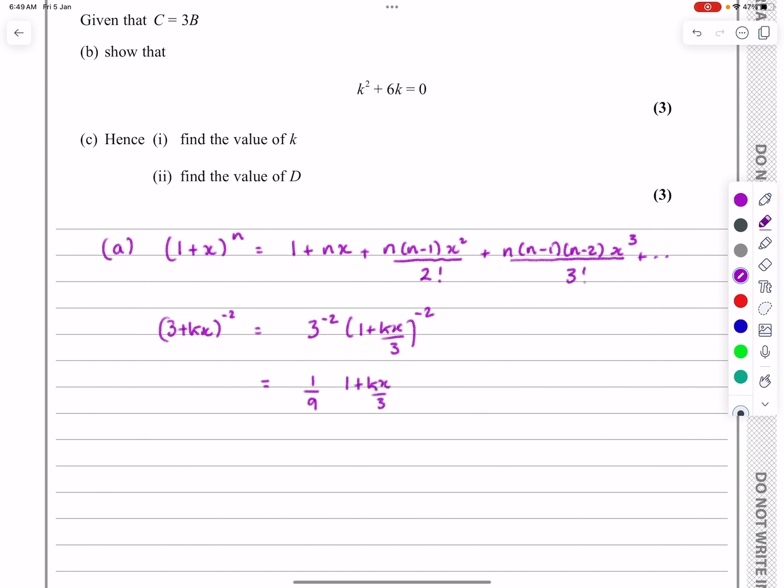three to the minus two is one over nine. One plus kx over three to the minus two. And now that part there, I'm going to expand using that formula there.